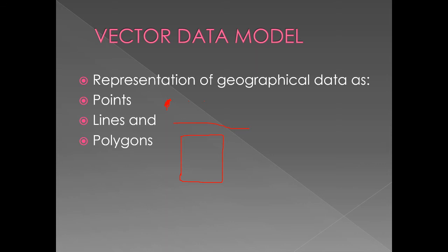Think in terms of AutoCAD — that is a vector application. In AutoCAD, we draw points, lines, and polygons. The vector model represents the whole world as points, lines, and polygons. You simply take a line map and you are looking at a vector model. When you take a line map, you are looking at a vector model.